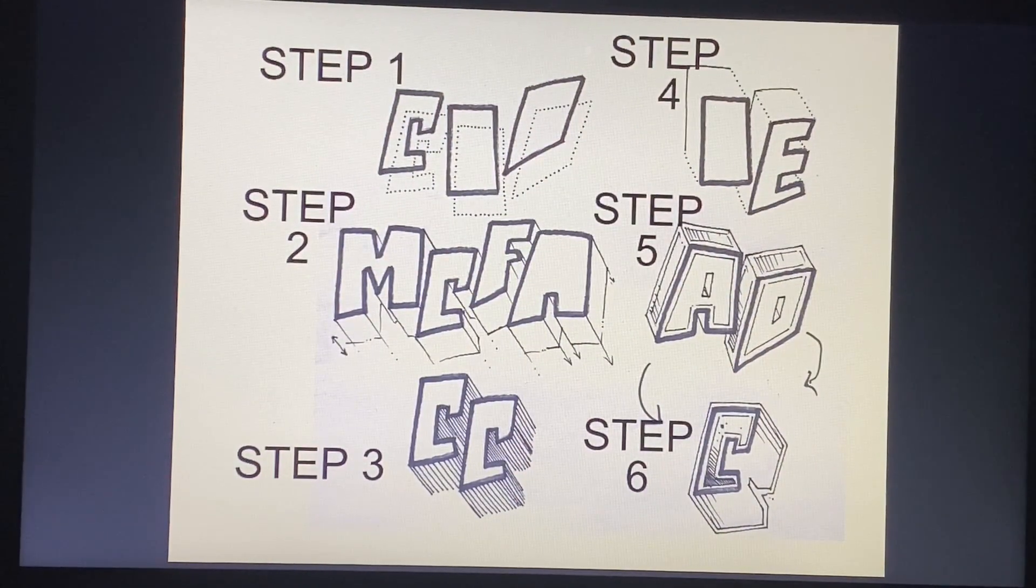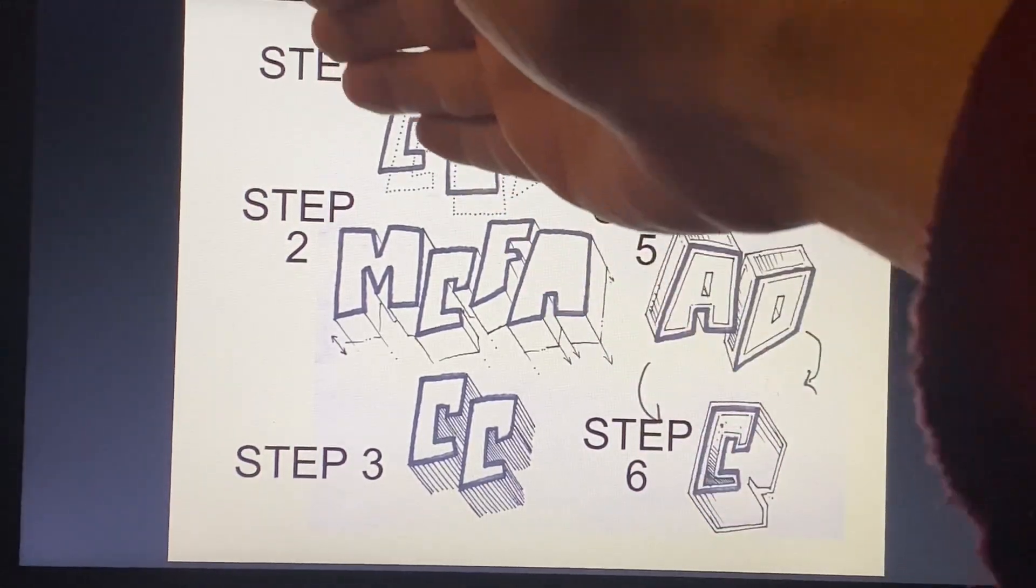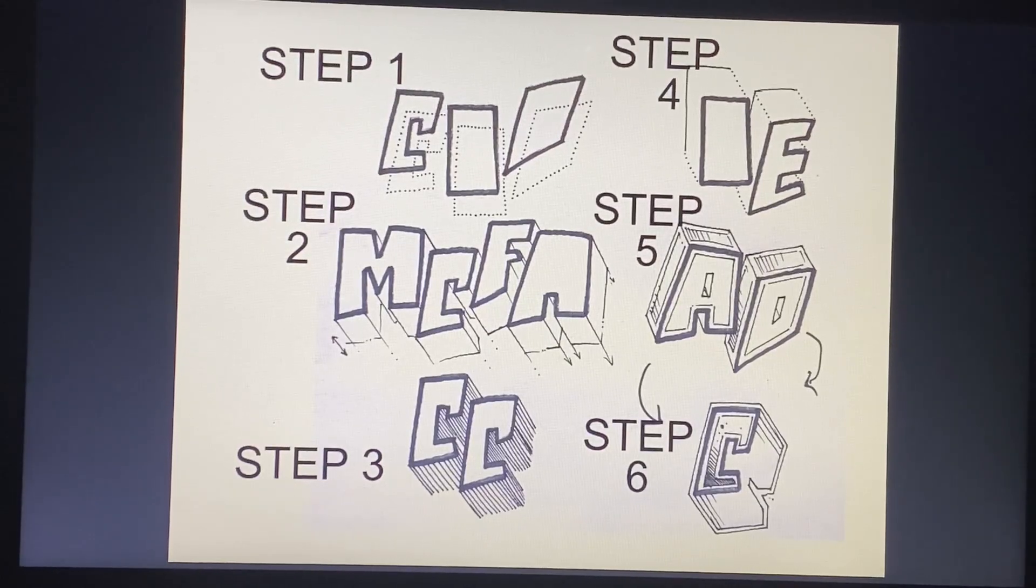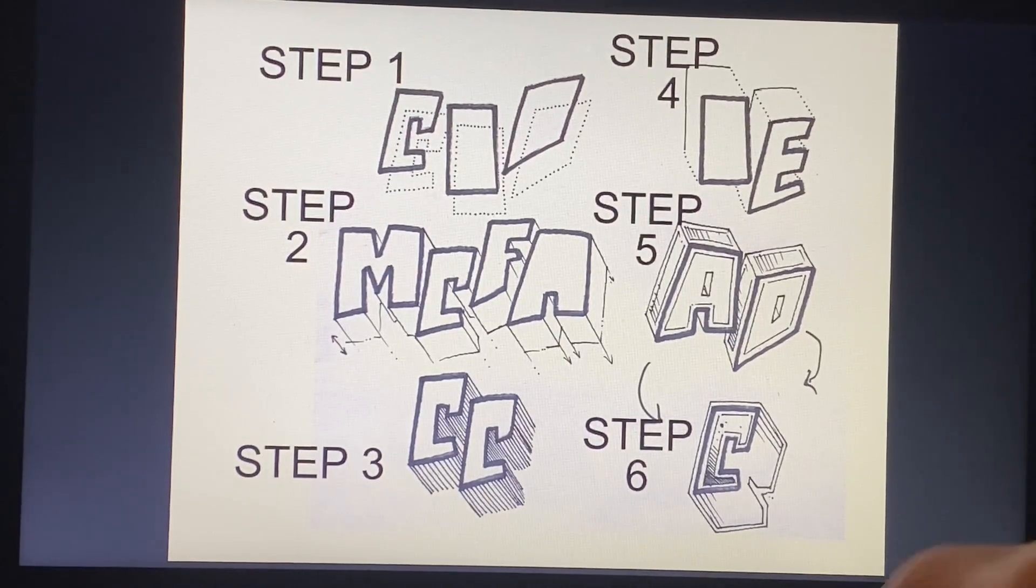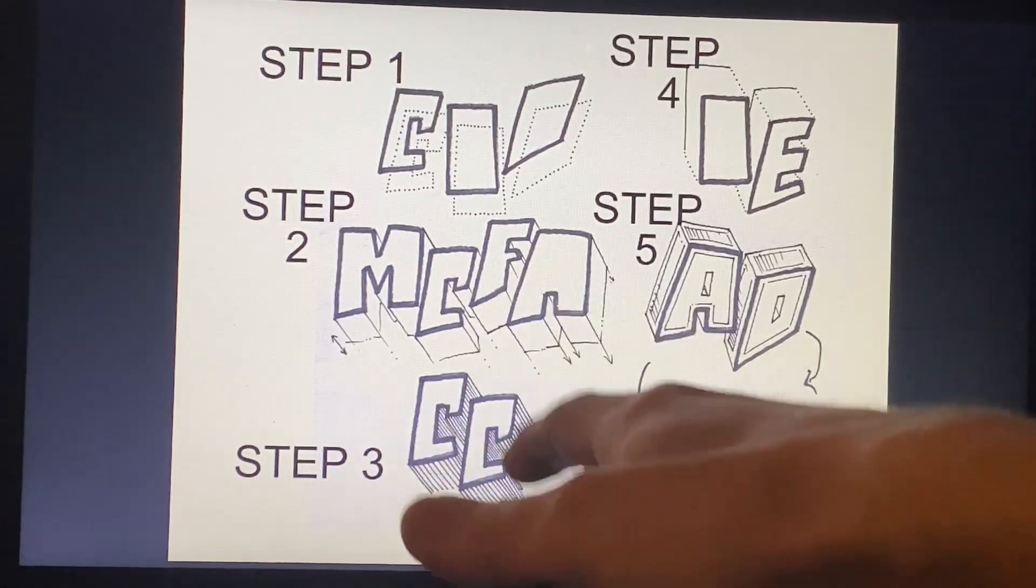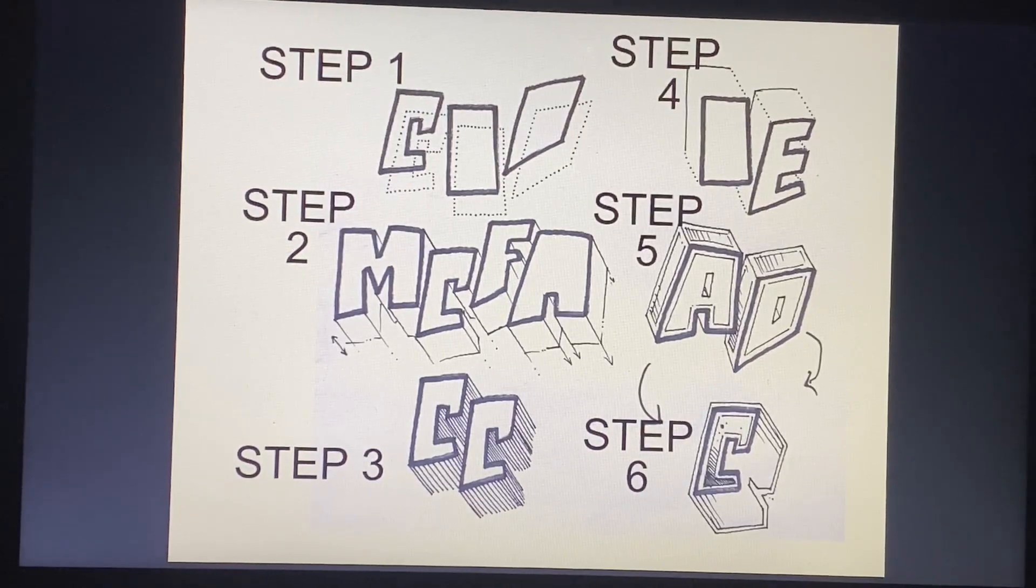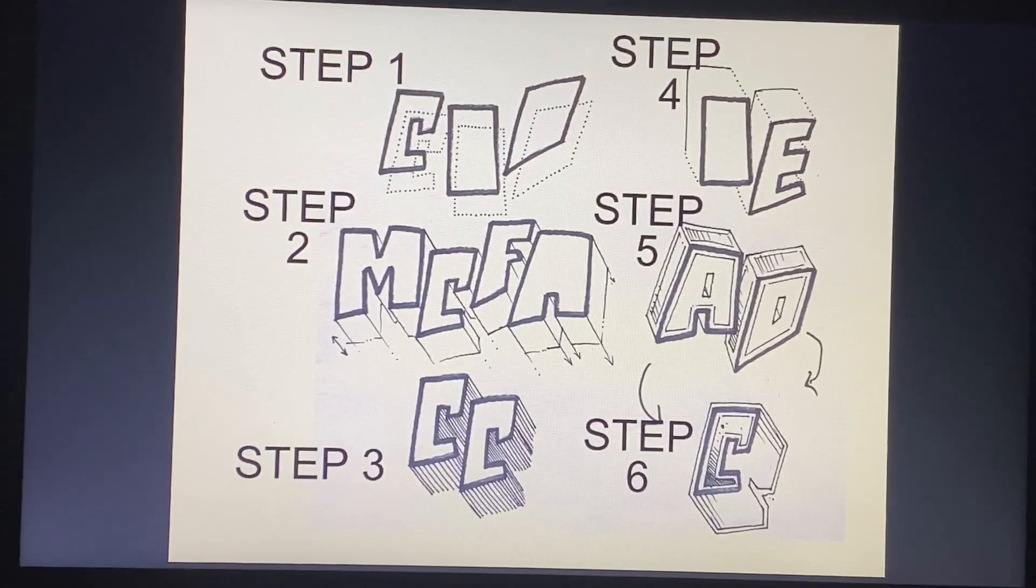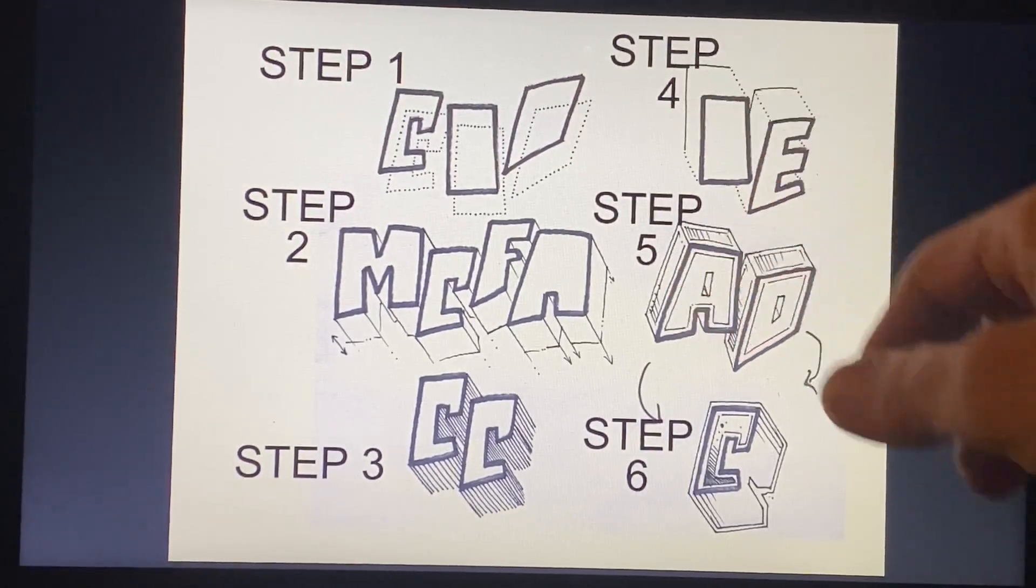In step 2, we're moving the copy for an angle. In this case, the angle went up to the left. For step 3, we're just connecting corners. And in this little icon right here, I used all these lines to show what direction those connecting corners would be. Step 4 is just following the outer edge.